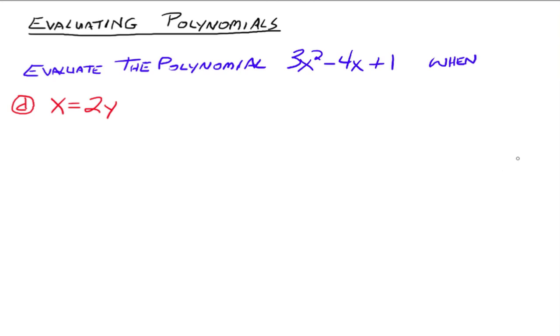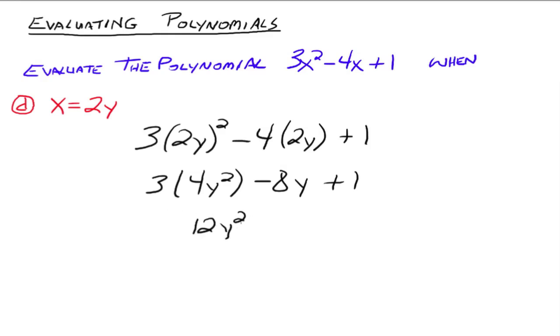I'm going to do one more, this time when x is 2y. We're going to put 2y in for x. So 3 times 2y squared minus 4 times 2y plus 1. Now we can simplify this up. What's 2y squared? That's 4y squared. Then negative 4 times 2y would be 8y plus 1. 3 times 4 would be 12y squared minus 8y plus 1. And there's nothing else we can do with that, but we've got a different expression. So the process is the same whether you're evaluating a polynomial with a number, with a letter, or with an expression. Replace your variable in your polynomial with whatever you need to replace it with, and then simplify it up.